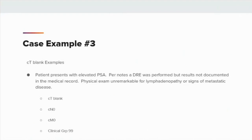Case example 3 — when a clinical T blank is assigned: Patient presents with elevated PSA. Per notes, a DRE was performed but results are not documented in the medical record. Physical exam is unremarkable for lymphadenopathy or signs of metastatic disease. Clinical T would be left blank, clinical N would be assigned as 0, clinical M would be assigned as 0, and the clinical stage group would be coded as 99. As a side note, when reviewing prostate chapter 58, per Donna Griss, the note underneath AJCC prognostic stage group was written to be used by physicians, and as registrars we are not to use that information and code as such.